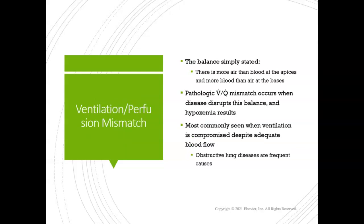Looking more closely at ventilation-perfusion mismatch: this is where there is more air than blood, or more blood than air. This imbalance is actually normal in different regions of the lungs. In the apices, if you're sitting upright, you have better ventilation because air rises to the top parts of the lungs. Blood is more dense, so gravity makes more perfusion at the bases and less perfusion at the apices — that's normal. Pathological mismatches occur when diseases disrupt this balance, most commonly when ventilation is compromised — lower ventilation relative to normal perfusion — which we see in COPD patients due to bronchoconstriction increasing airway resistance.